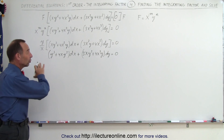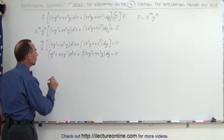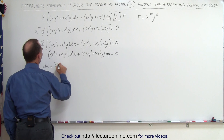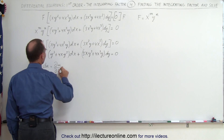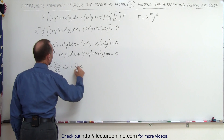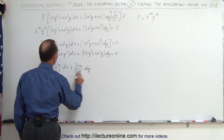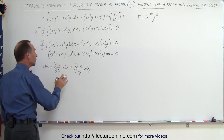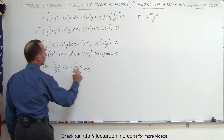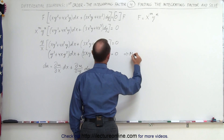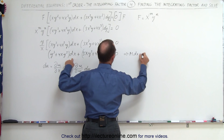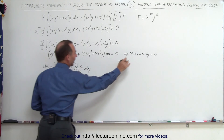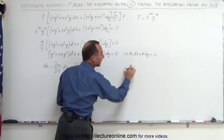We've already shown two videos ago that this is now an exact equation, so we can solve it. Remember that this is going to be in the format du = (∂u/∂x) dx + (∂u/∂y) dy. We can also see that this is in the format M dx + N dy = 0, so combining those two, the partial of u with respect to x equals M, and the partial of u with respect to y equals N.